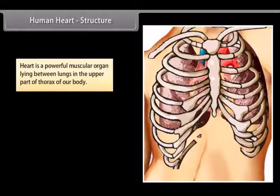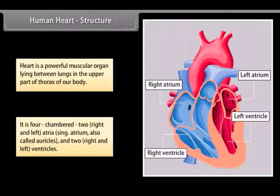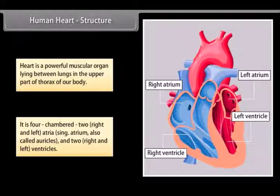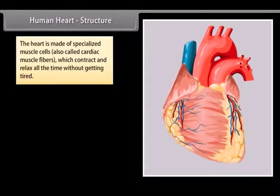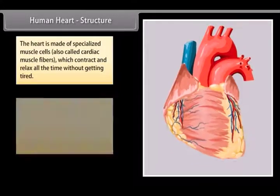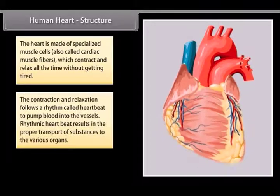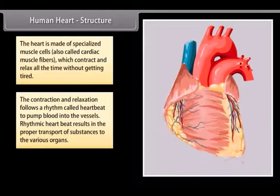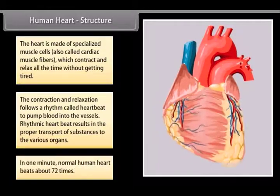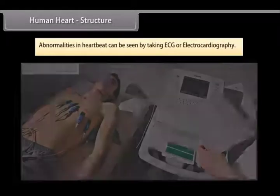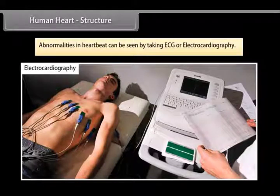Human heart. Structure. Heart is a powerful muscular organ lying between lungs in the upper part of thorax of our body. It is four chambered: two right and left atria, also called auricles, and two right and left ventricles. The heart is made of specialized muscle cells also called cardiac muscle fibers which contract and relax all the time without getting tired. The contraction and relaxation follows a rhythm called heartbeat to pump blood into the vessels. Rhythmic heartbeat results in the proper transport of substances to the various organs. In one minute, normal human heart beats about 72 times. Abnormalities in heartbeat can be seen by taking ECG or electrocardiography.